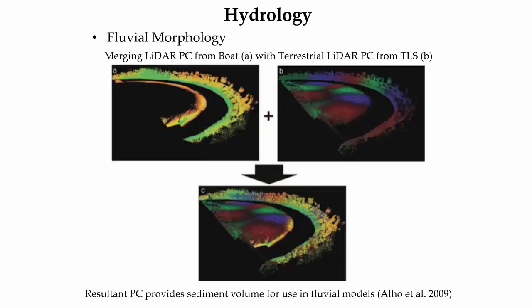Fluvial morphology is another hydrology application that has benefited from LiDAR data collection and analysis. The study shown in the graphic required high-resolution data products for hydrological modeling of river processes. The boat-based mobile LiDAR system was able to capture the steep banks of the river at greater speed than stationary terrestrial LiDAR data capture. Meanwhile, terrestrial LiDAR scans were captured at river point bars to provide greater detail on sediment accretion. By merging the two terrestrial datasets together, the scientists were able to create accurate digital terrain models for temporal studies of fluvial processes.